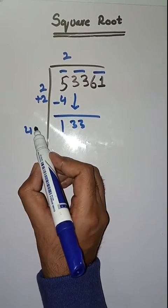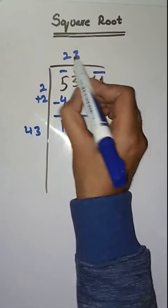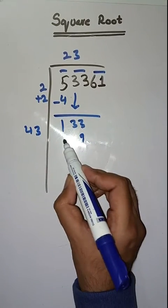Now we will take a number 3. 43 threes are 129.